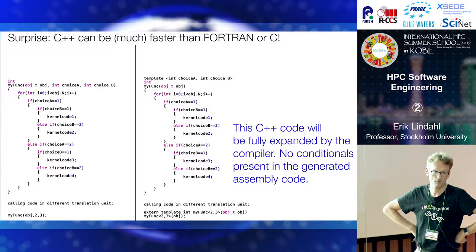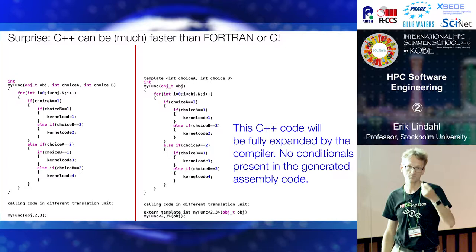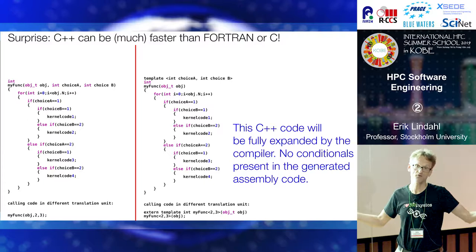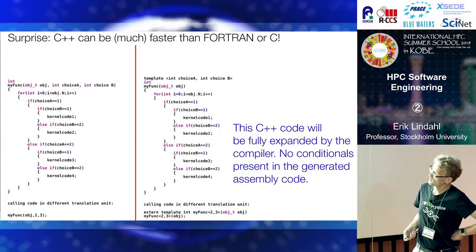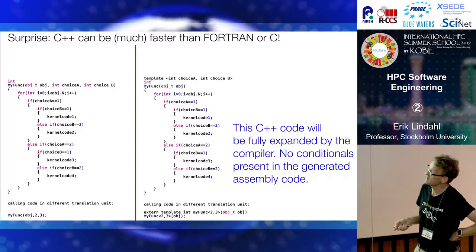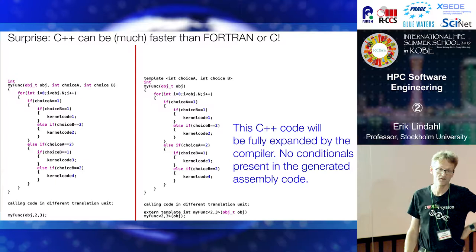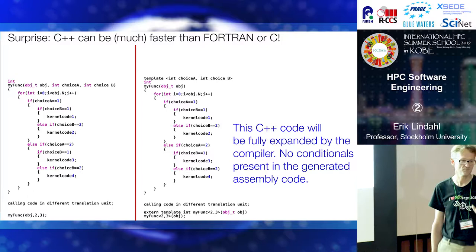Another thing that might surprise you about why we love C++ is that it can frequently be faster than either C or Fortran. For a long time, we achieved speed in our inner kernels by not having any conditionals, because conditionals break the pipelining of modern processors. In C or Fortran, conditionals would be variables in the code, meaning the compiler could not optimize them away. With C++, we can make those choices template parameters. When they are template parameters, the compiler expands this at compile time into different functions, removing every single conditional and eliminating diverging pipelines. This code will likely be one order of magnitude faster than the equivalent C or Fortran.